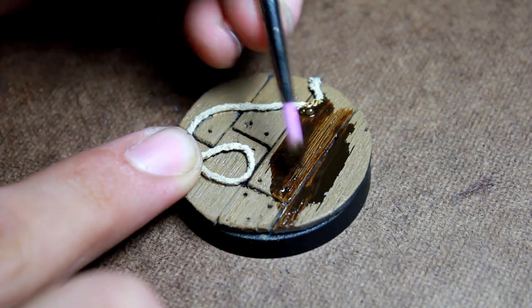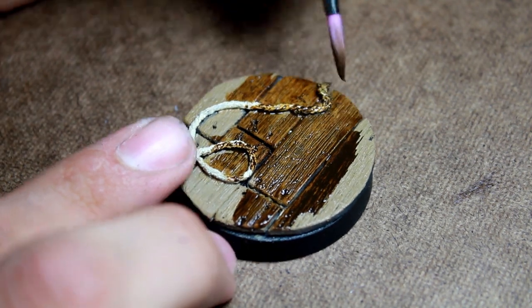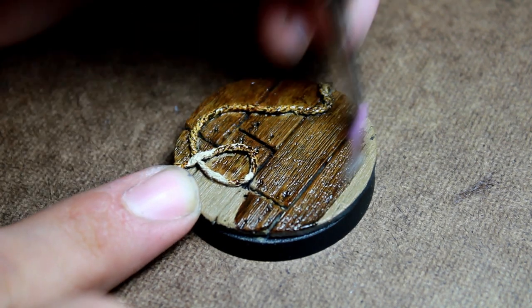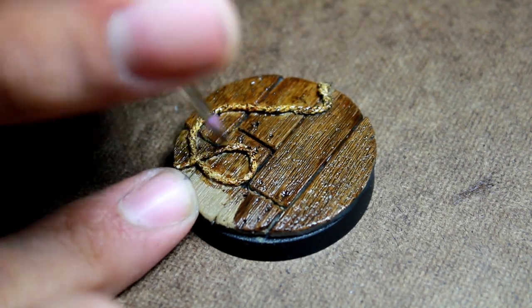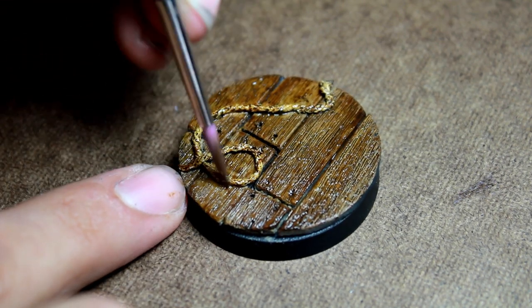And then I gave the entire base a once over with Vallejo Game Ink Sepia. This is really going to bring out the grain of the wood and the different shapes inside of the rope.